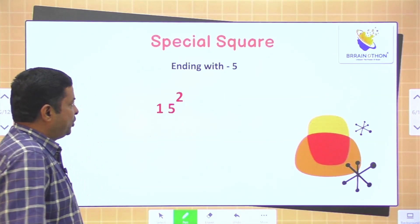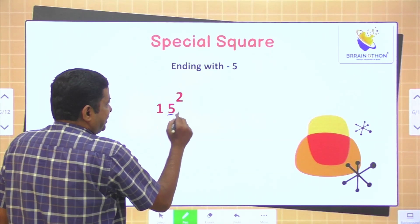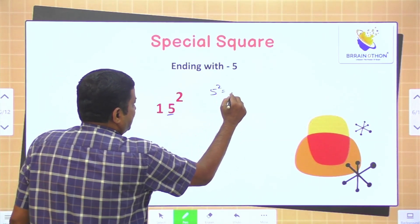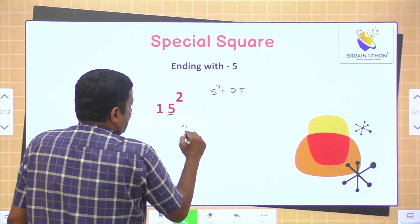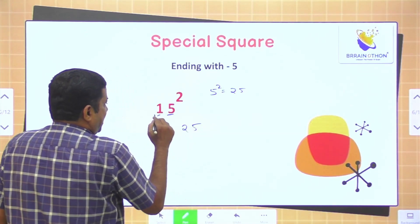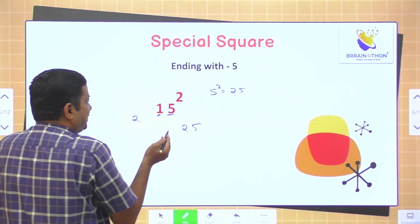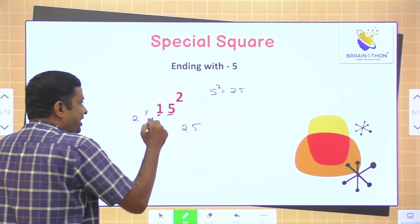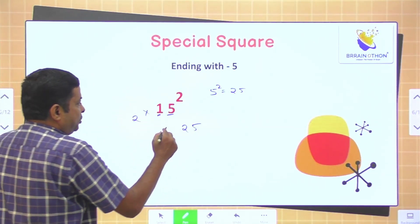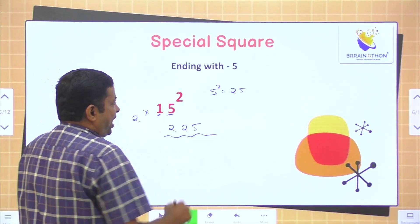Let's solve one more sum: 15 square. This number ends at 5, so we will use this formula. 5 square is 25. Now, we need to multiply 1 with its next number. The next number of 1 is 2, and 1 into 2 is 2. So the final answer is 225.